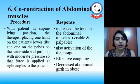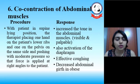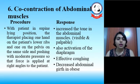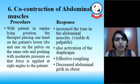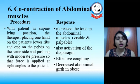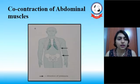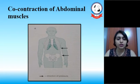The last technique is co-contraction of the abdominal muscle. The procedure involves the patient in supine lying position, with the therapist placing one hand on the patient's lower ribs and one on the pelvis on the same side, pushing with moderate pressure so that the force is applied at a right angle to the patient. The response is an increase in tone in the abdominal muscle, which is both visible and palpable. After giving the co-contraction technique, we may find firmness in the belly. We may also find activation of the diaphragm, effective coughing, and decreased abdominal girth in obese patients.